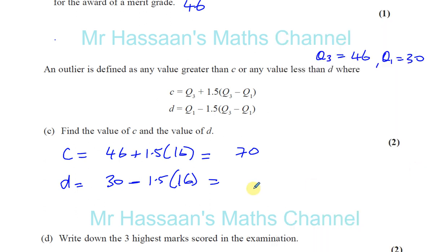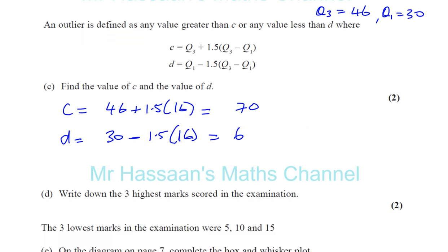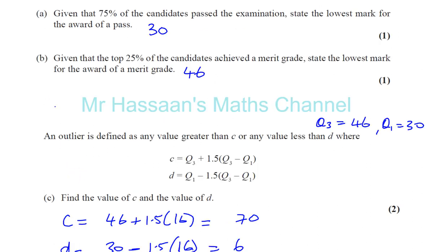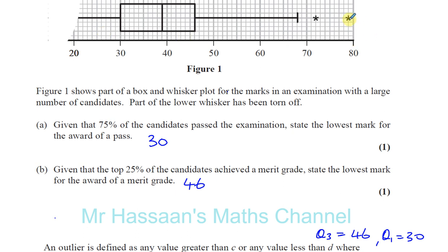And it says write down the three highest marks scored in the examination. So the three highest marks scored in the examination, we can see from the plot, are going to be these three marks over here. You've got 79, and you're going to have 72, and we know that 70 is an outlier.